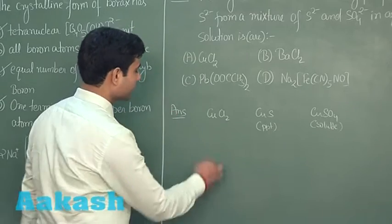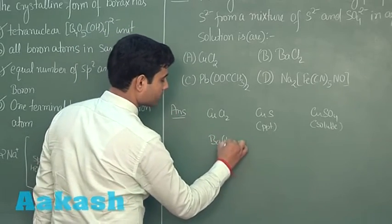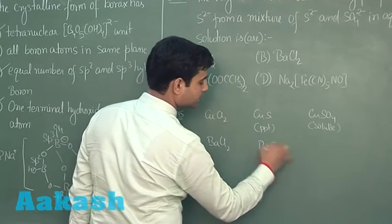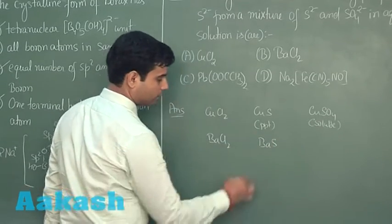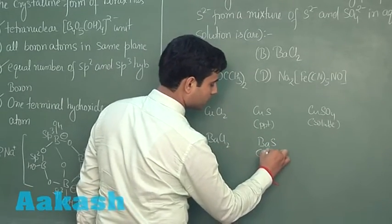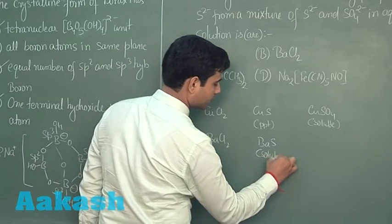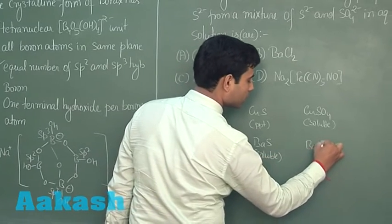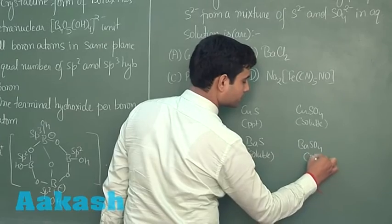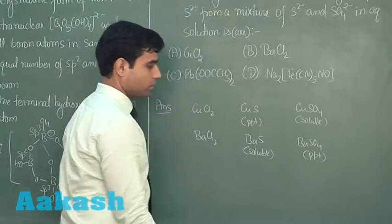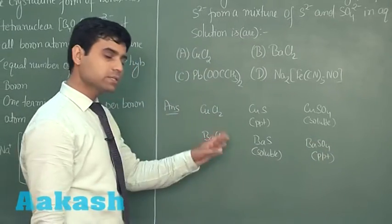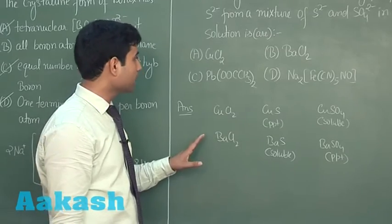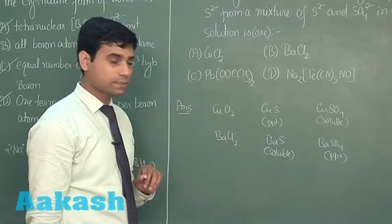The second option, BaCl₂: in the case of BaCl₂, we have BaS which is soluble, and BaSO₄ which forms a precipitate. So BaSO₄ is the precipitate, not the sulfide. So this cannot be our answer.